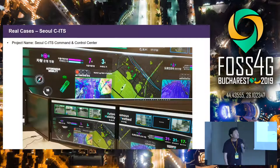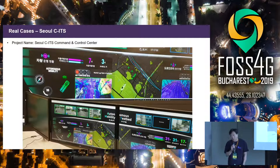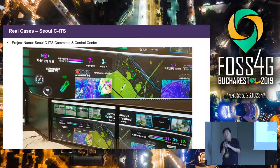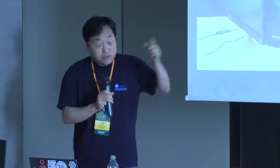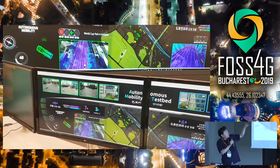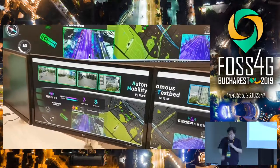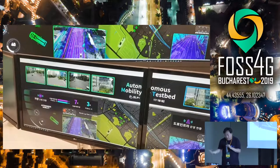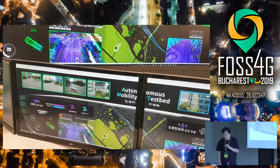Two months ago, we successfully completed the Seoul Metropolitan Government's CITS Command and Control Center. The Seoul Metropolitan Government wants to deploy self-driving cars all around Seoul and track where the cars are. You can see high definition roadmaps, lots of point cloud, and real cars driving — they employed our Mago 3D for this project.